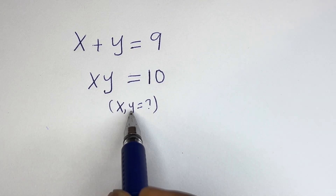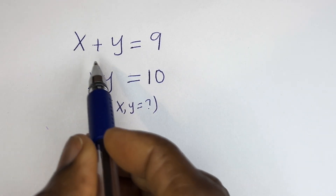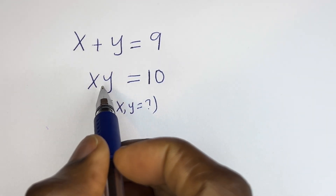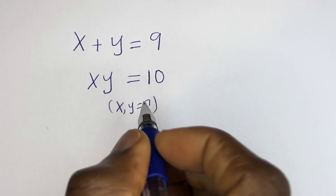Hello. How to solve for x and y in this equation: x plus y is equal to 9, and x times y is equal to 10.